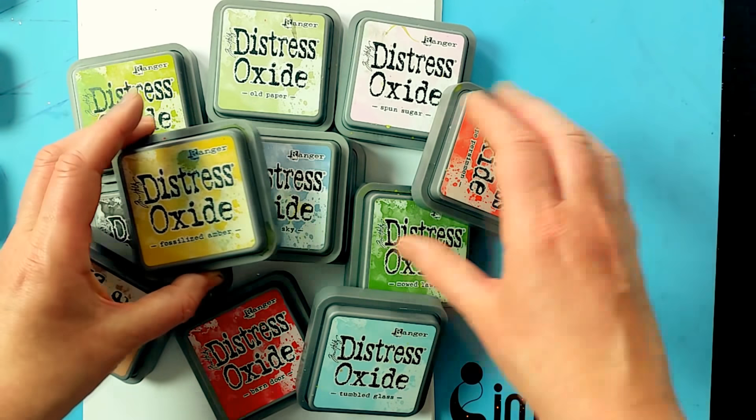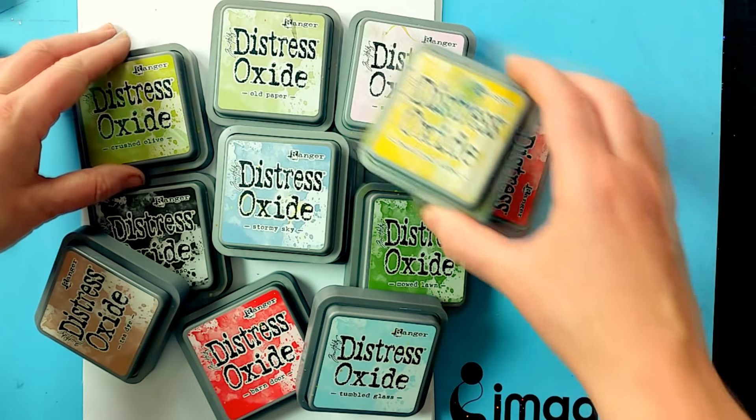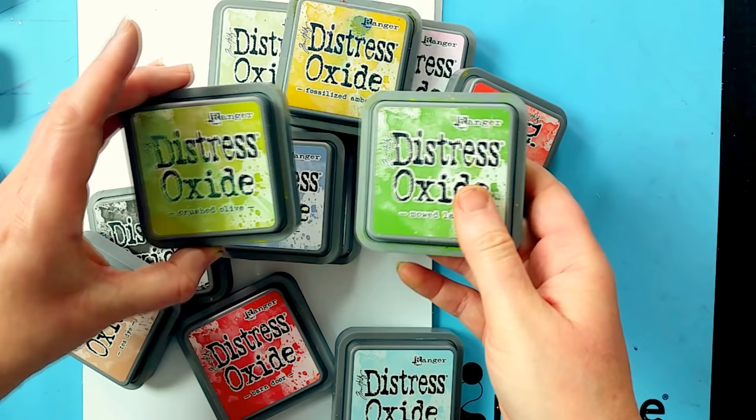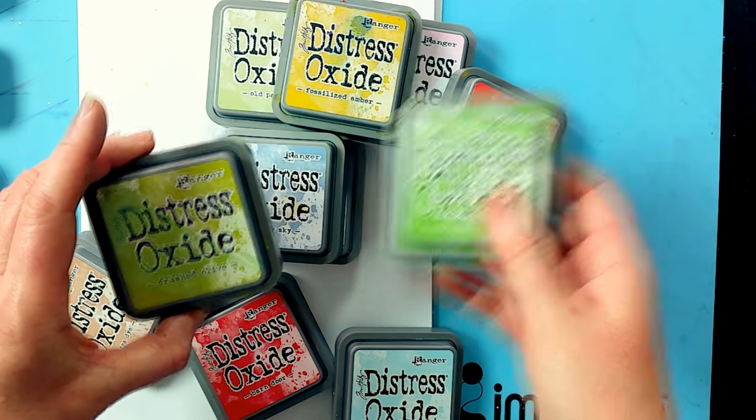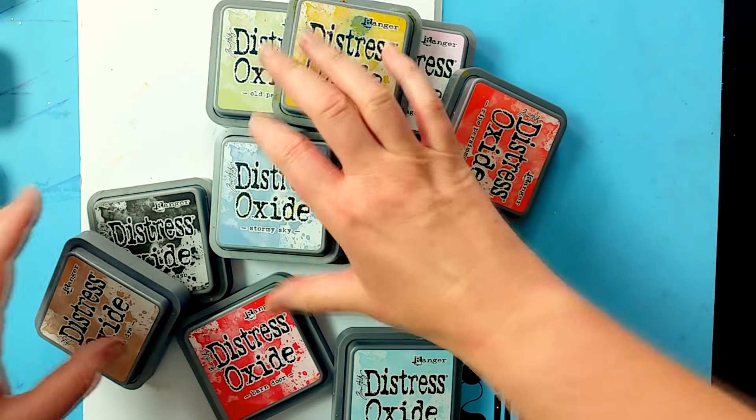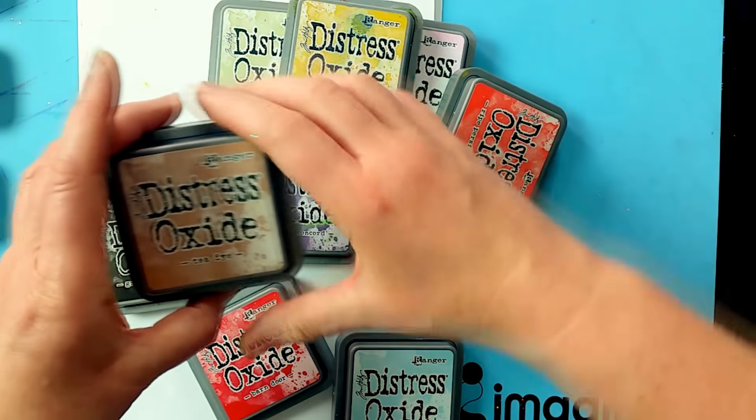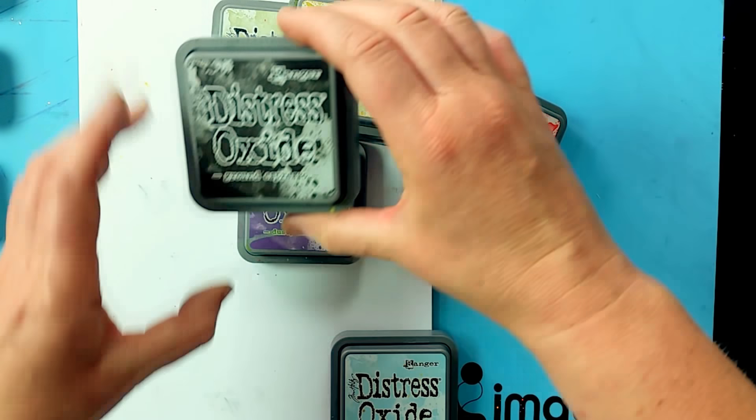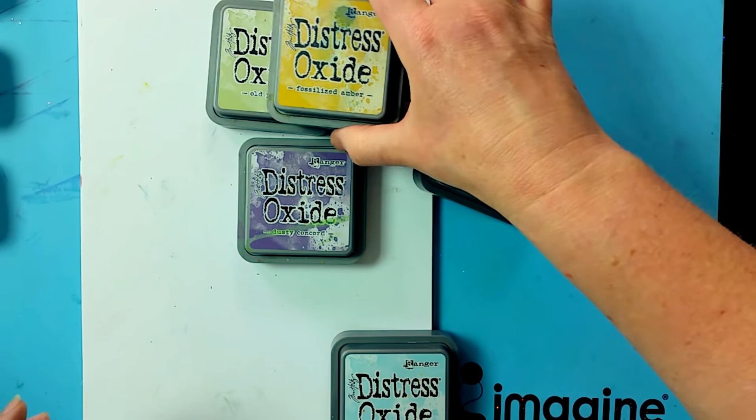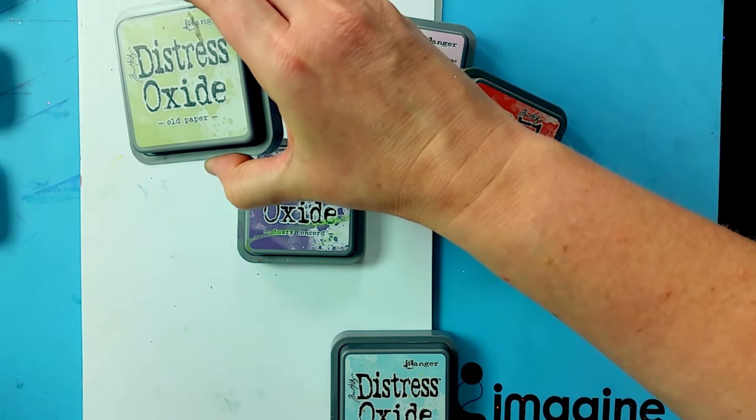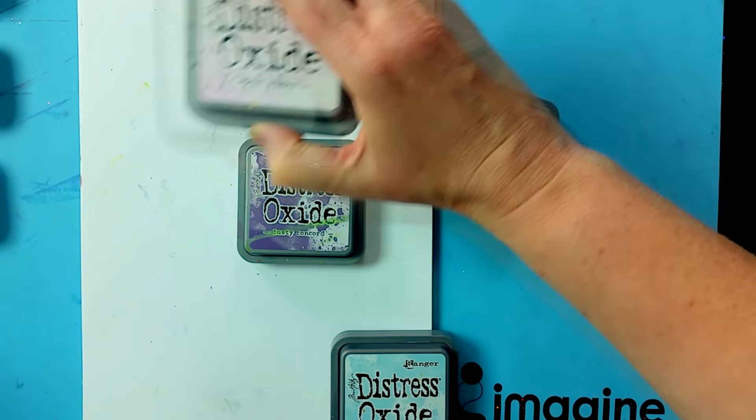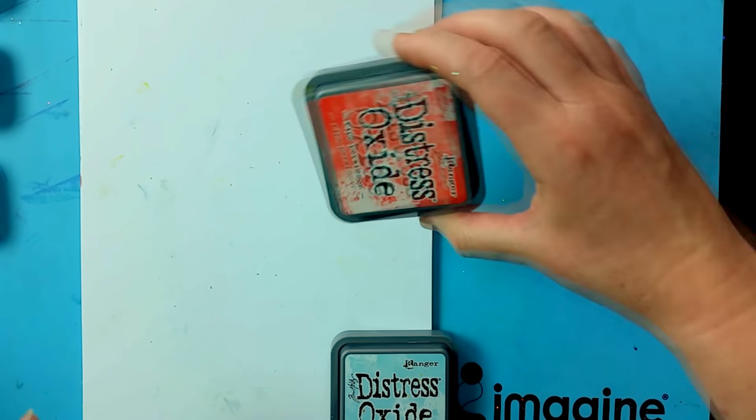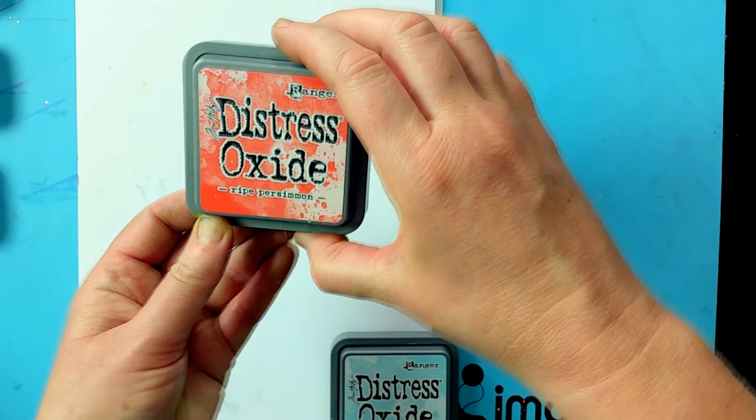My favorites are definitely the mowed lawn and the crushed olive, which is what we're going to be working with today. We've also got stormy sky, tea dye, barn door, ground espresso, fossilized amber, old paper, spun sugar, dusty concord, ripe persimmon, and tumbled glass.